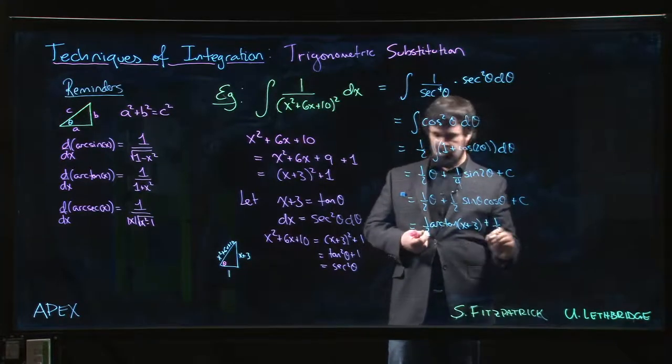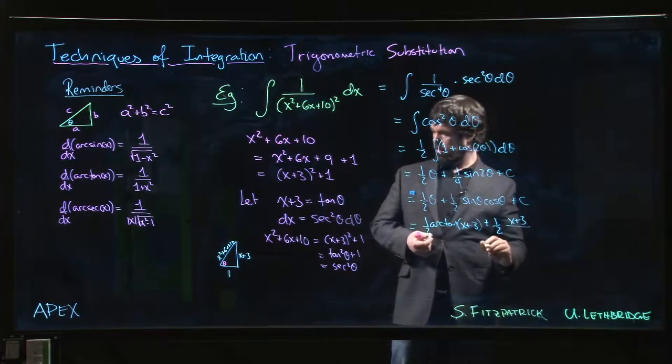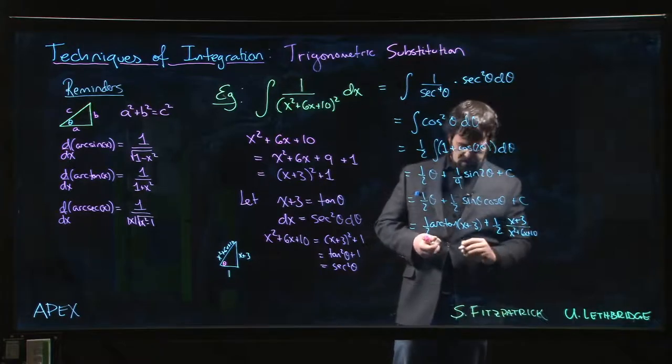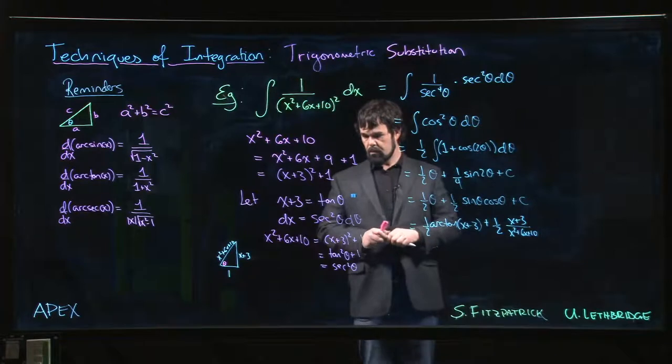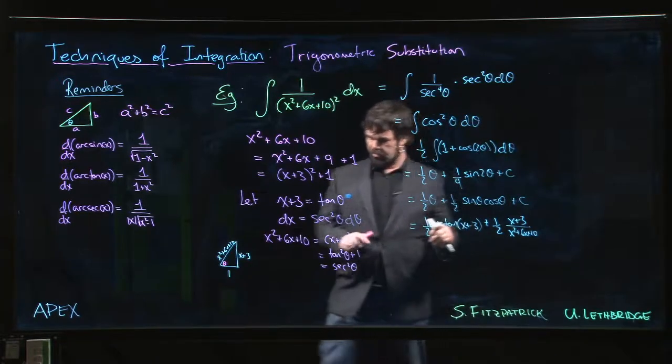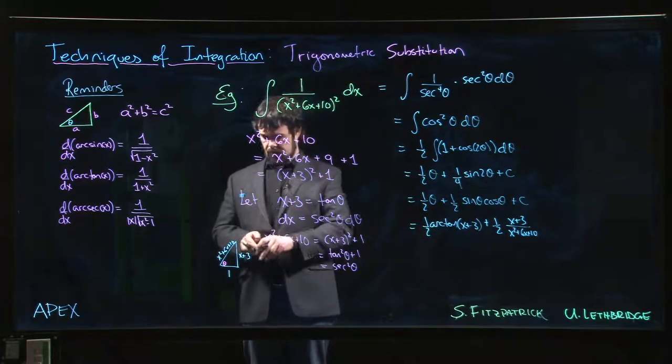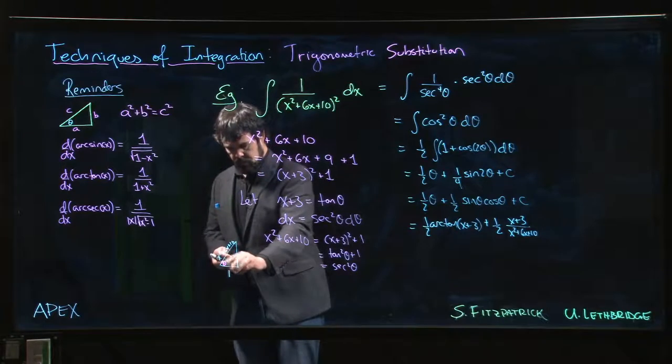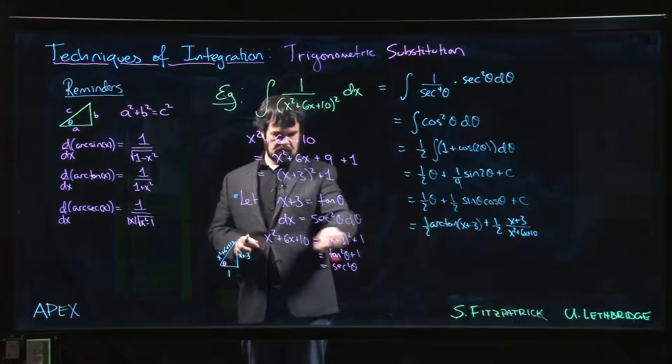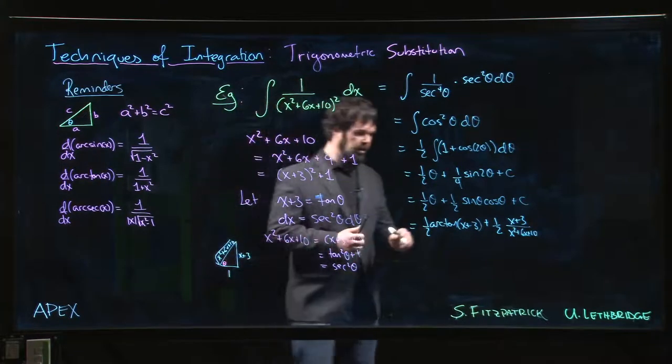So sine theta is going to be x plus 3 over the square root of x squared plus 6x plus 10. Make sure - yeah, this square plus that squared gives me that, so I do need the square root.